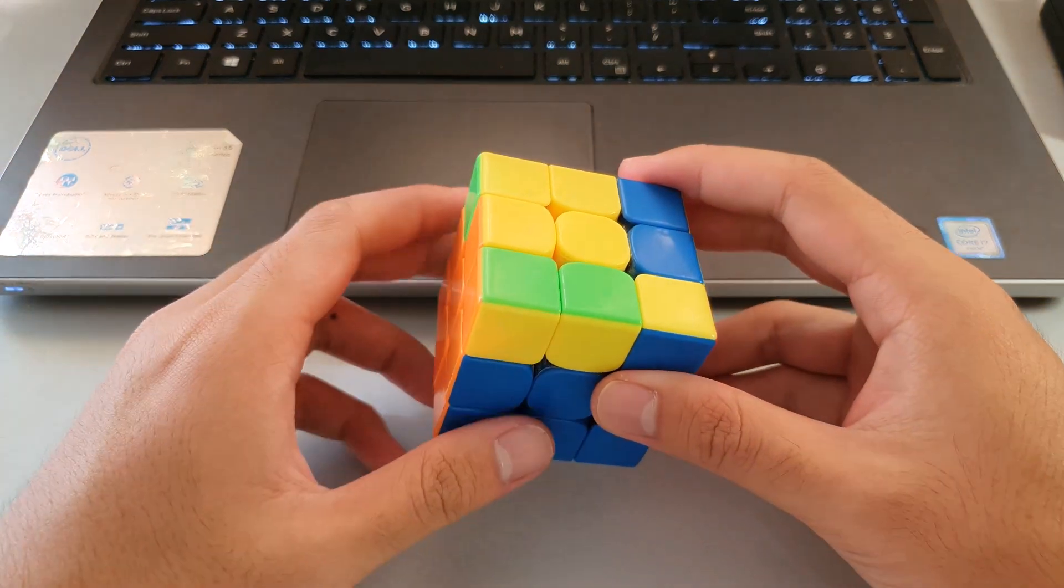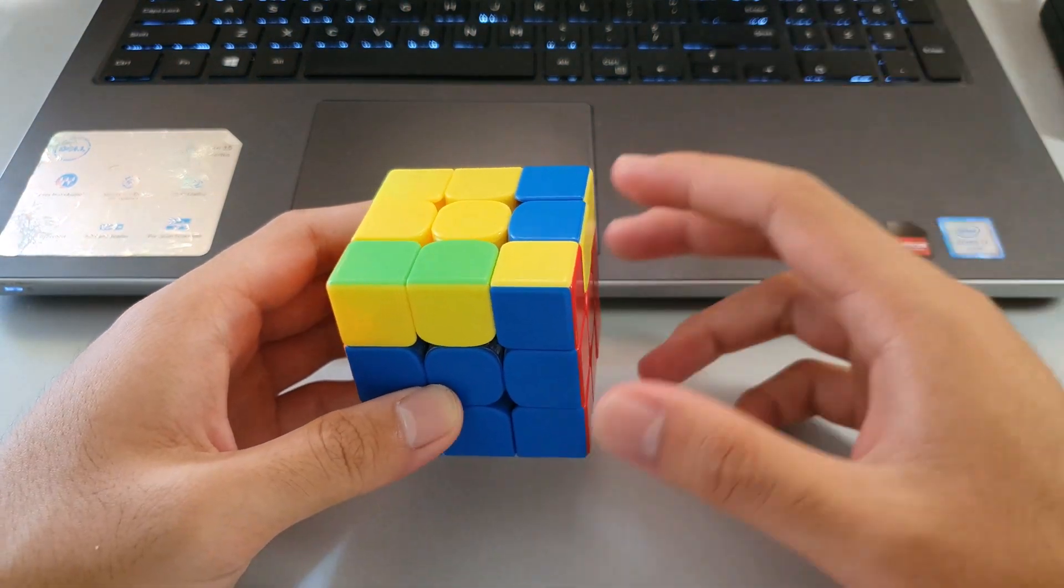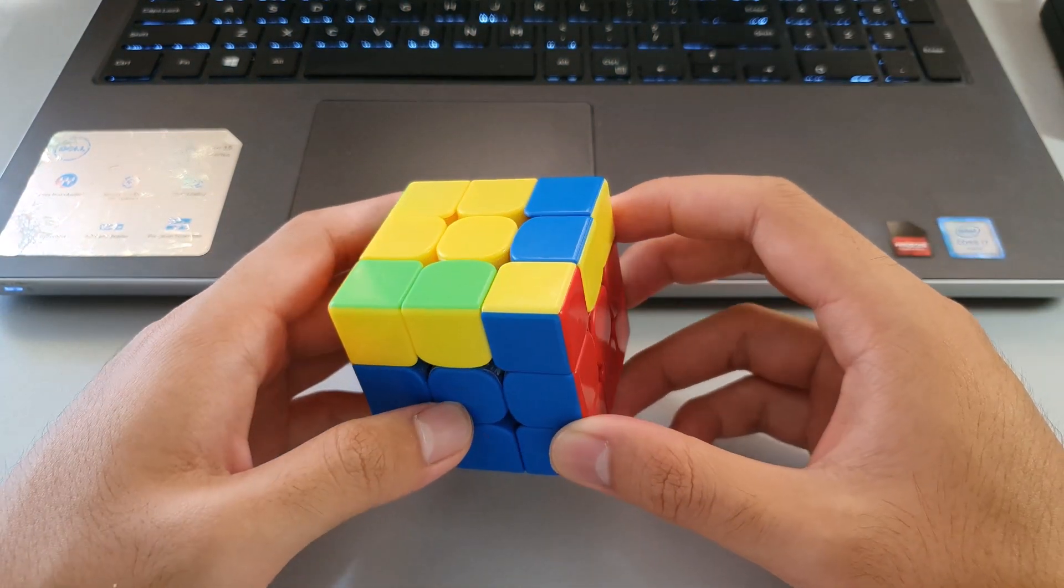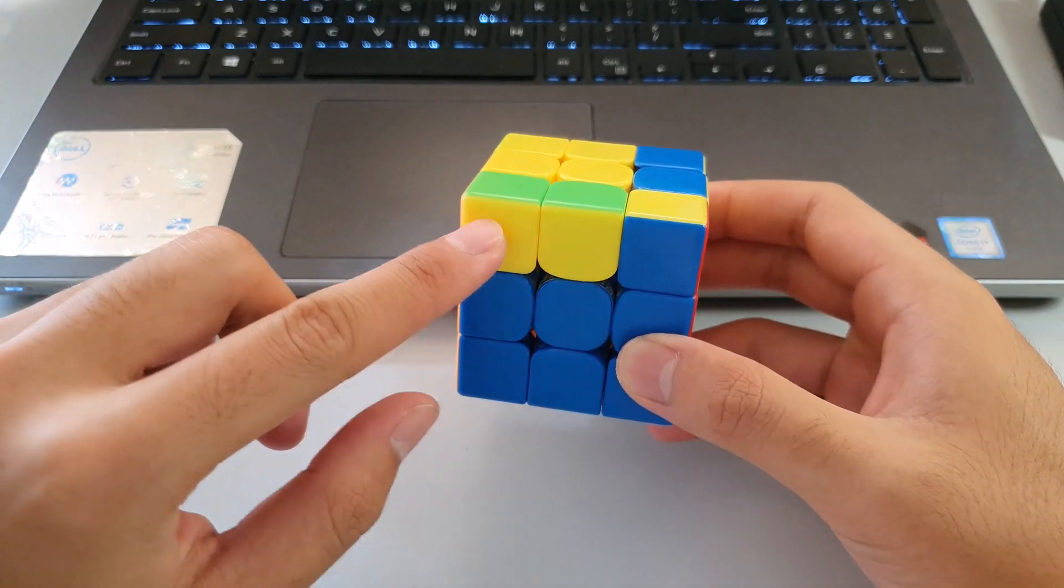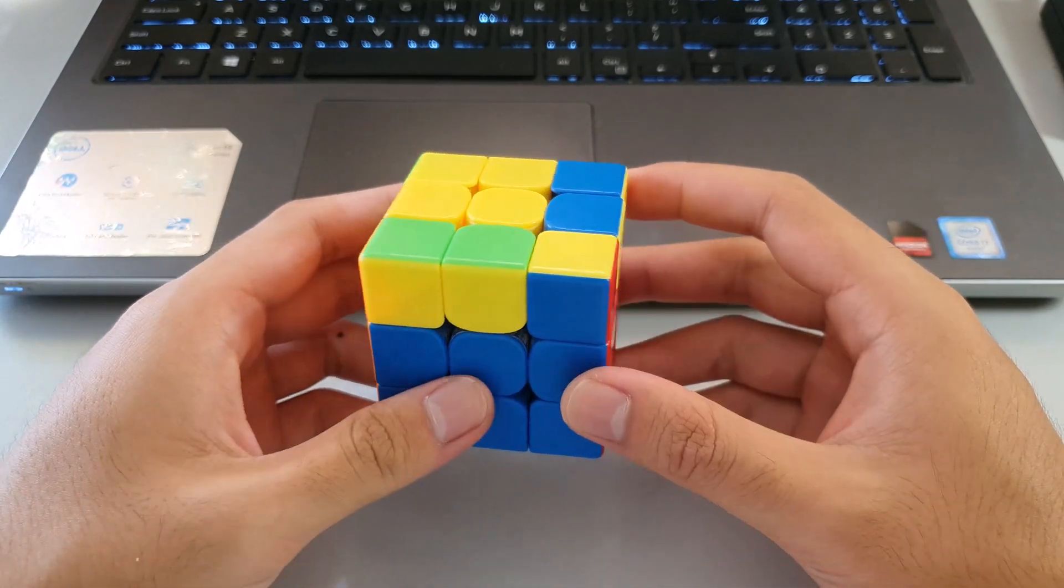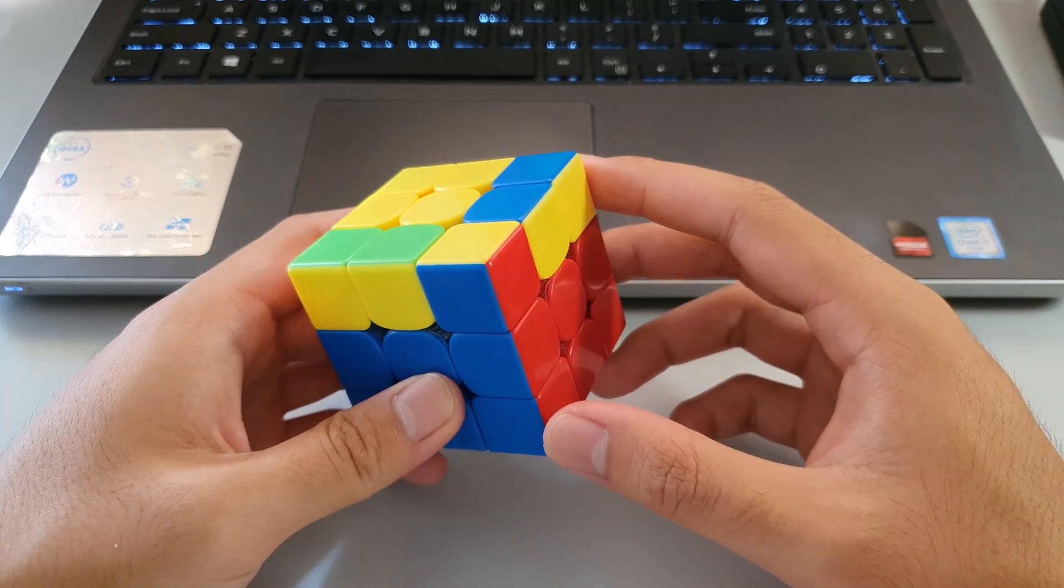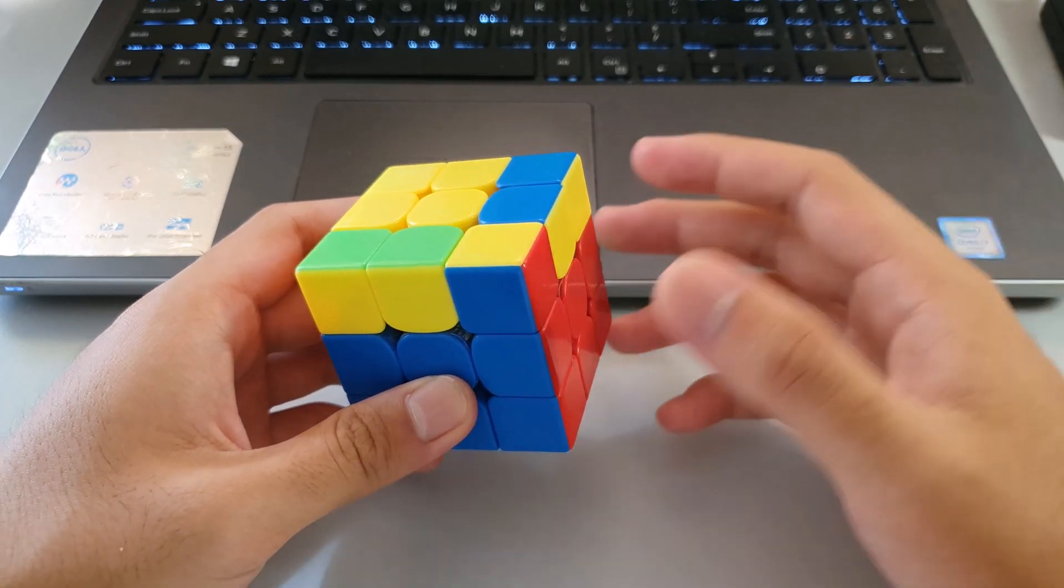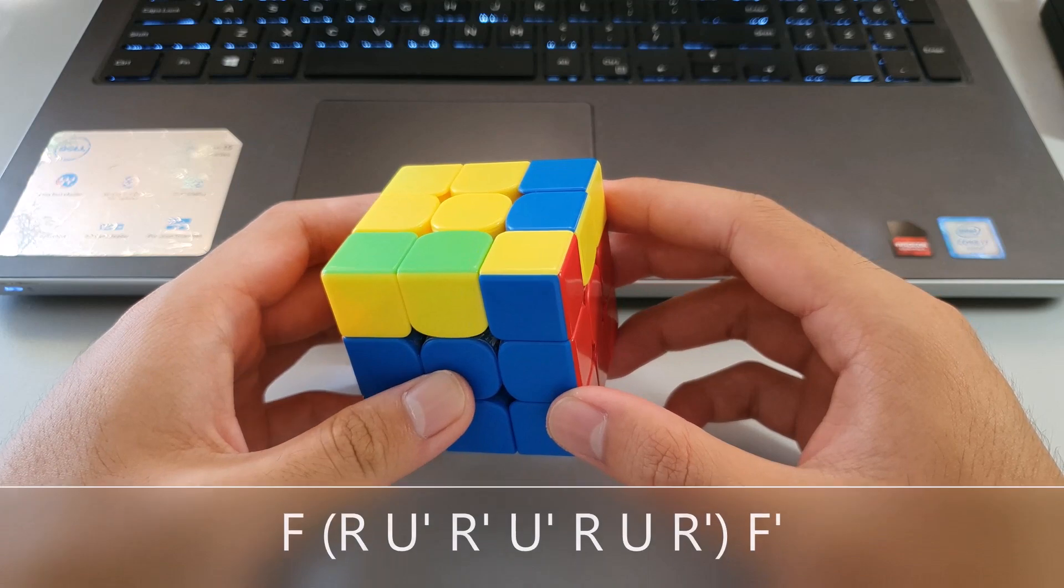Now that you know Y-perm, technically you do know two more full OLL cases. The first one is this fish shape, with two bars here and here. This one actually kind of looks like a Y-perm, but it's a fish shape OLL, and it can be solved using the first half of Y-perm, like this.